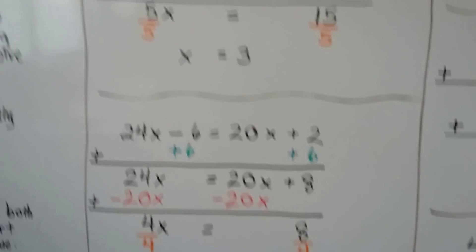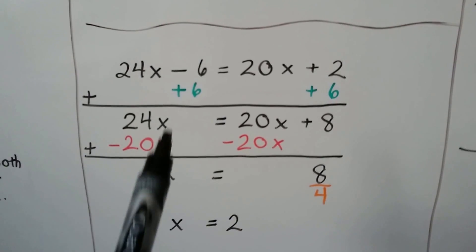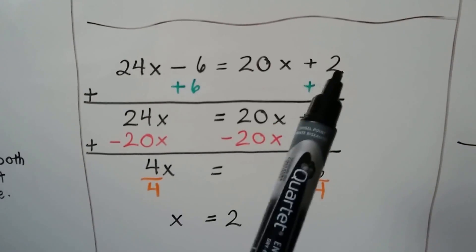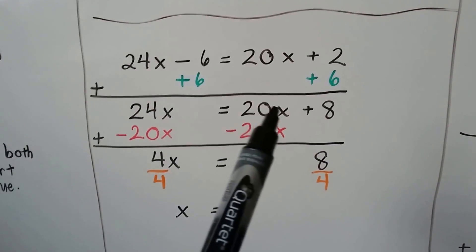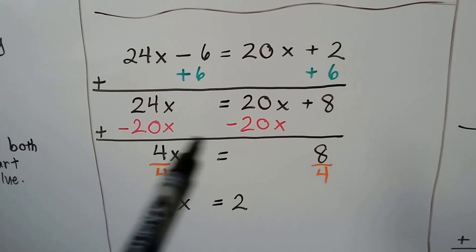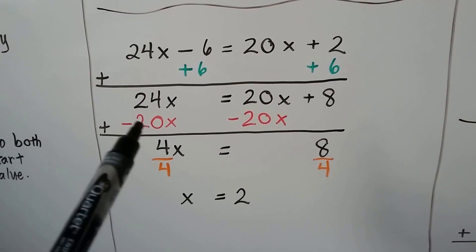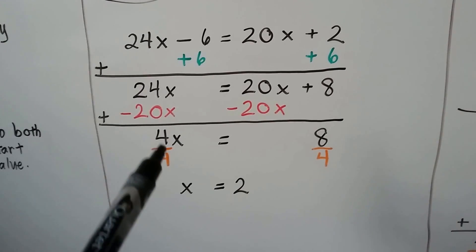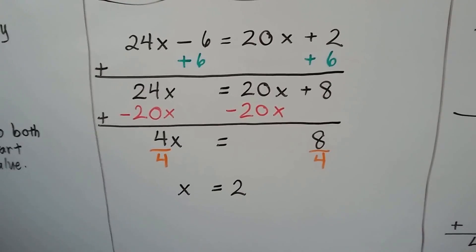Let's take a look at this one. We don't have to do adding a negative; we can add a positive. Here we have a minus 6. To get all the x's on one side and all the whole numbers on the other side, we can add 6 to both sides — that'll create a zero pair here — giving us 24x equals 20x plus 8. Now to get the x's to one side, we can take away the 20x, or add a negative, doing the same thing to this side. That gives us 4x on this side and 8 on this side. We divide both sides by the coefficient 4 and we get x equals 2.